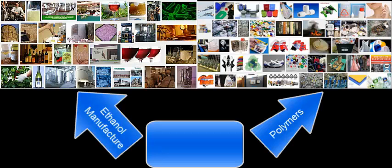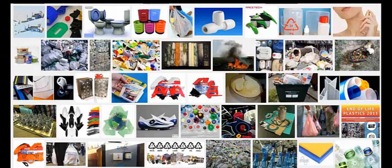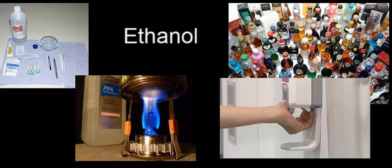This video will cover two main areas of organic chemistry: the manufacture of ethanol and the production of polymers. Let's begin with the manufacture of ethanol.